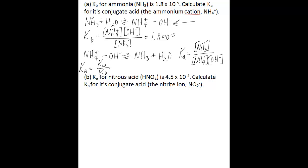All you need to do to solve this problem is divide Kw, which is 1.0 times 10 to the negative 14, by the Kb value that you're given, which is 1.8 times 10 to the negative 5. And when you do the math, you get your Ka value, which is 5.6 times 10 to the negative 10.